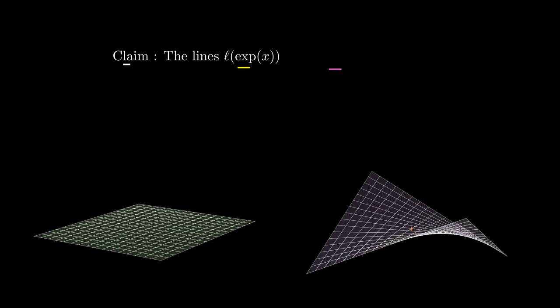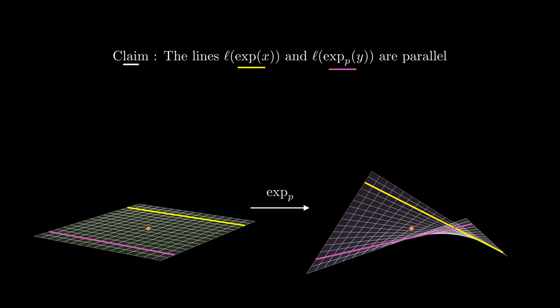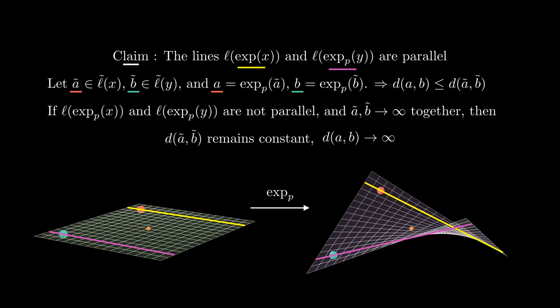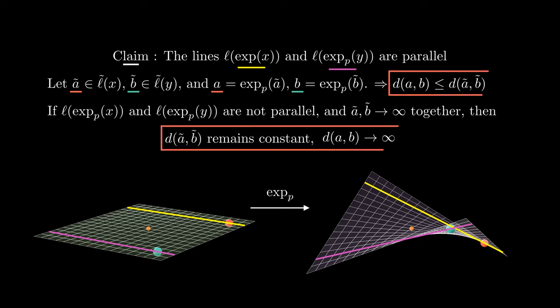We now claim that these lines in three-dimensional space are also parallel. To see that, assume that two of them are not. Pick a point A tilde in one of the corresponding lines in Tp sigma, and B tilde in the other one. Because the exponential map is a local isometry, the distance between their images in three-dimensional space is not longer than the distance between them in the tangent plane. But if we move these two points together to infinity, the distances between them remains constant, but the corresponding points in R3 move in different directions, so the distance between them goes to infinity, and this is a contradiction.